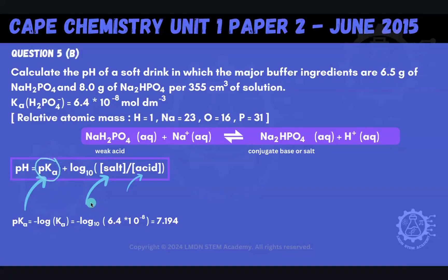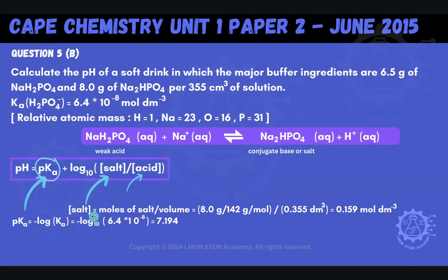Now we find the concentration of the salt. Concentration equals moles per unit volume. The moles of salt equal mass divided by molar mass: 8 grams divided by 142 g/mol. Dividing by the volume of 0.355 dm³ gives a salt concentration of 0.159 mol/dm³.